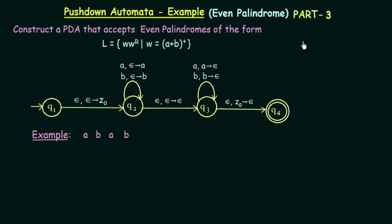In the last two lectures we have been studying pushdown automata, and we designed a pushdown automata that accepts even palindromes. In the last lecture we took a string 'abba', which was an even palindrome, and passed it to the pushdown automata. We saw clearly how the pushdown automata works step by step for accepting even palindromes. If you need to know how we designed this pushdown automata, please watch the previous lectures.